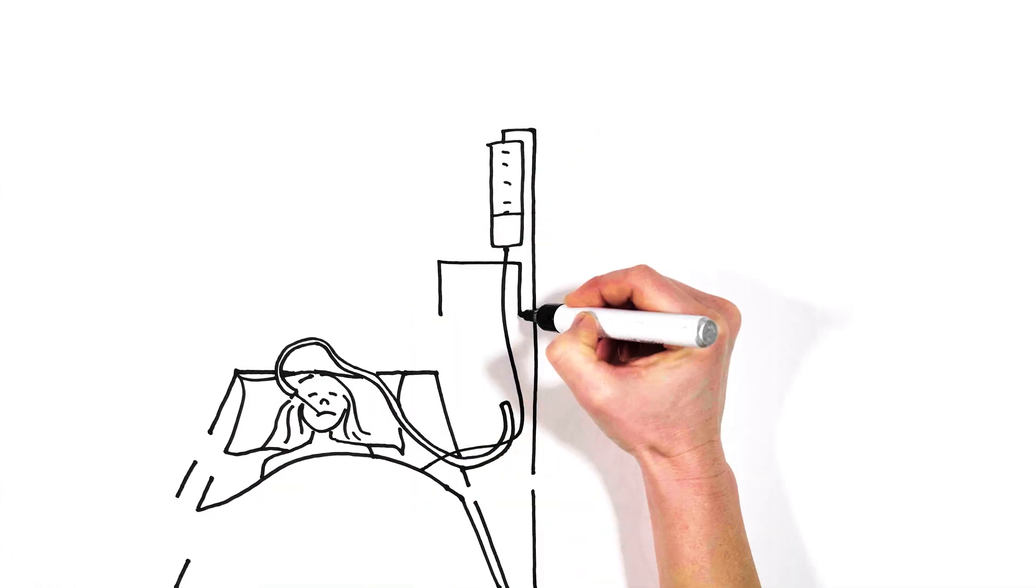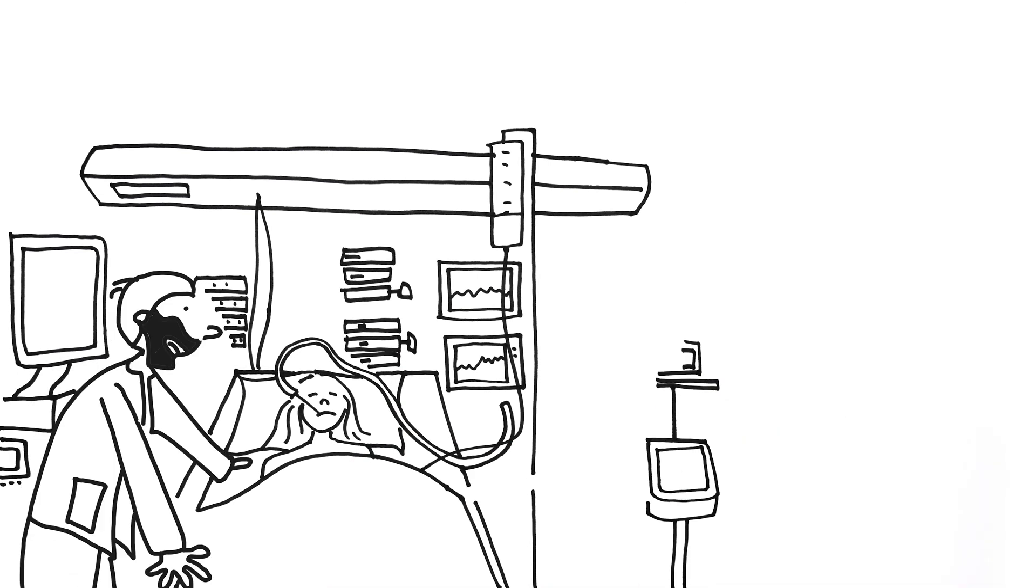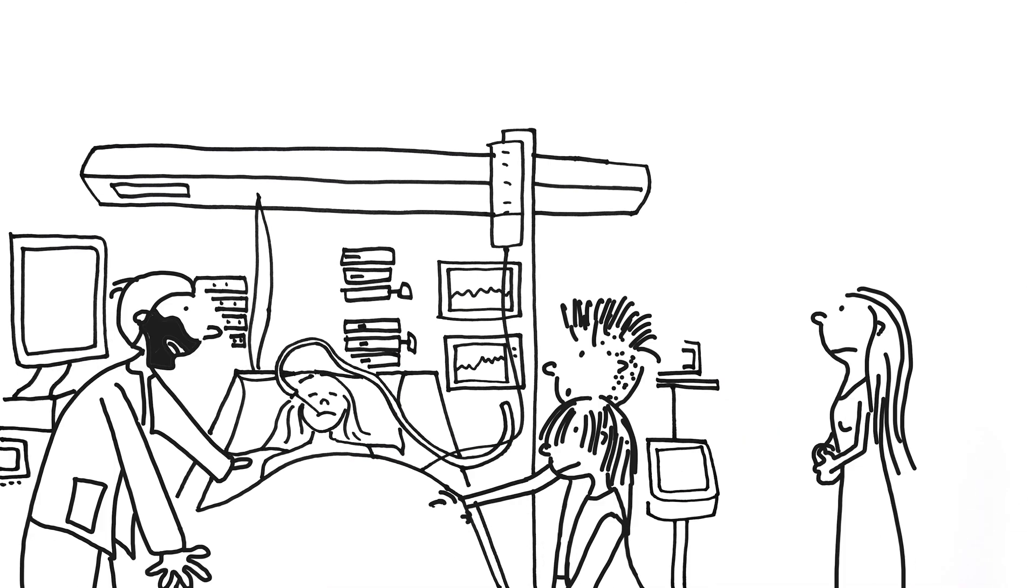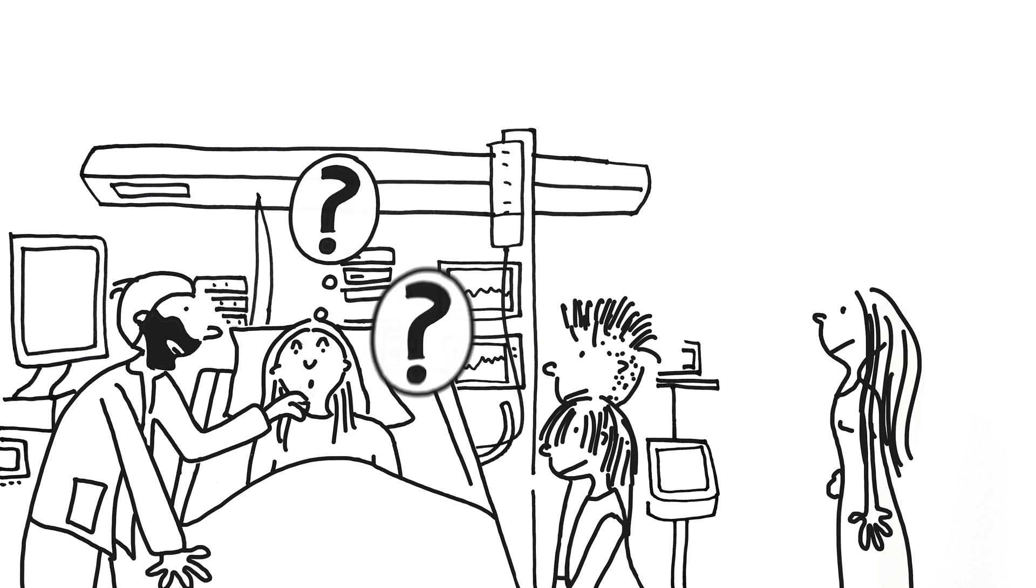Doreen has the flu with pneumonia and sepsis. Her condition was critical. She was mechanically ventilated and was kept in a coma for 10 days. Now she's awake again. She has no clue where she is and what has happened.